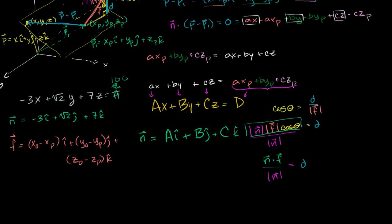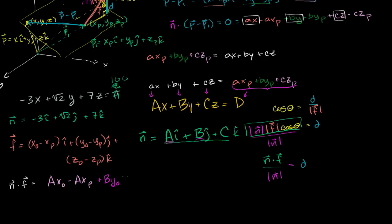Let's take the dot product between the normal and f. From the last video, the normal vector's components are just the coefficients a, b, c on the x, y, z terms of the plane equation. So n dot f equals a times (x0 minus xp), plus b times (y0 minus yp), plus c times (z0 minus zp), all over the magnitude of the normal vector. The magnitude of the normal vector is the square root of a squared plus b squared plus c squared.